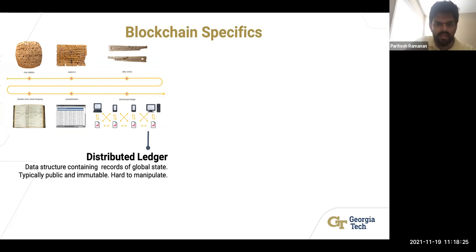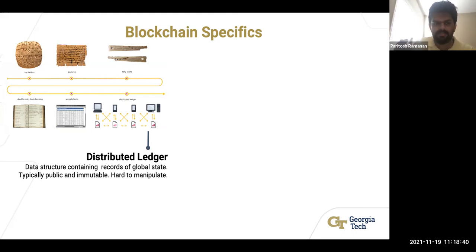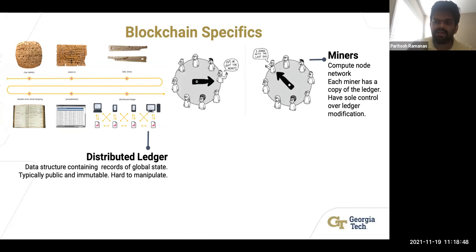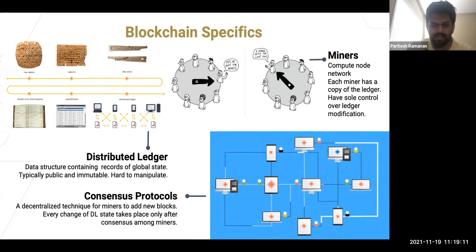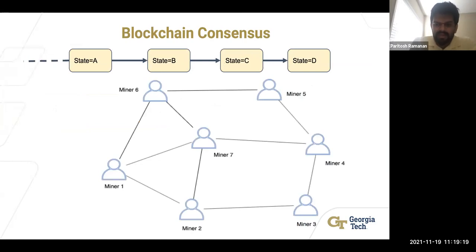Each miner has its own individual copy of the ledger, and changes happen through the consensus protocol in real time. Let's walk through an example. Say there is a miner network of six or seven miners. The blockchain has reached state D — there is a chain of states A, B, C, D — and now a user wants to change the state to E.